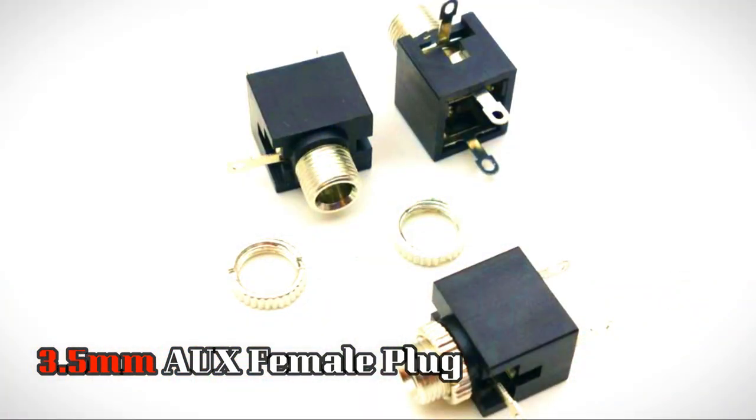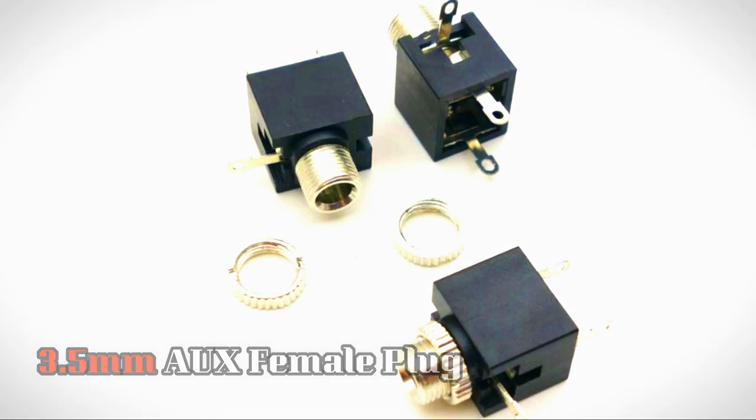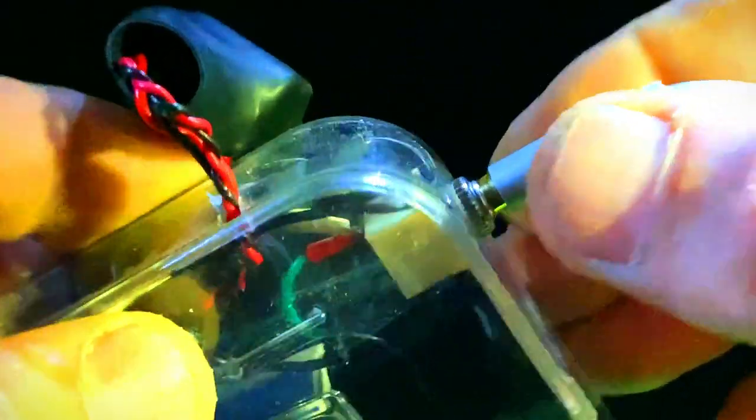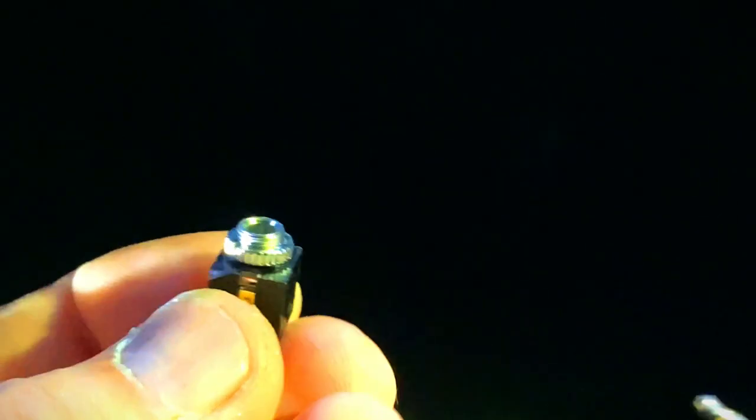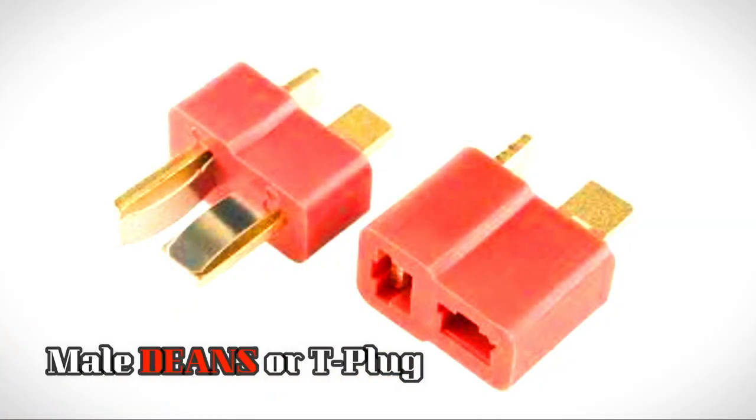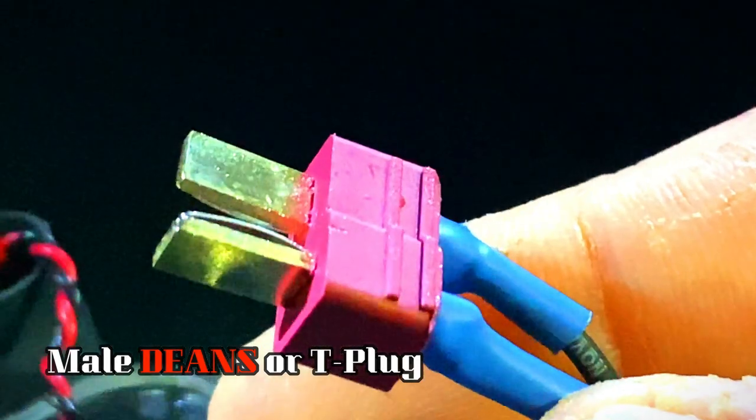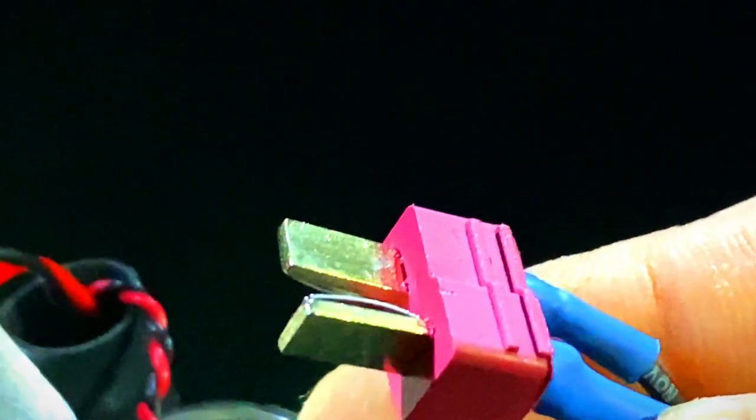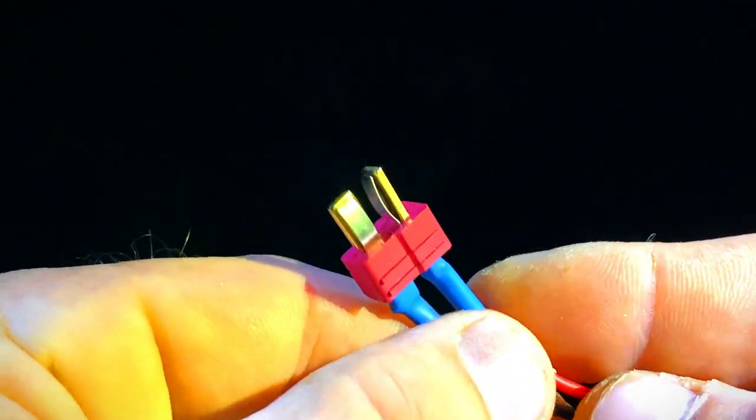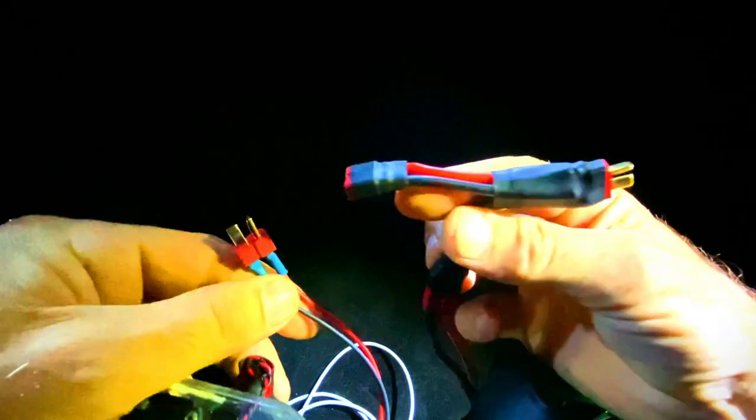Also the module sends out tones for the setting so you're going to need to hear how many beeps. What you're also going to want is a 3.5 millimeter female plug. That's basically just to take your PPM signal, so that's just going to slot straight into there. You're also going to want a power plug.